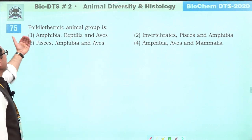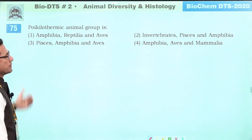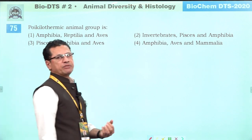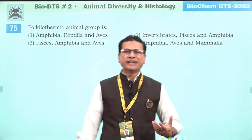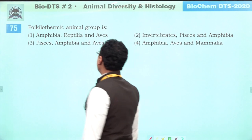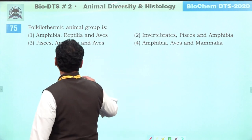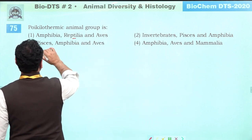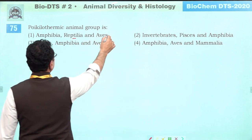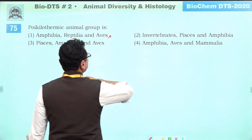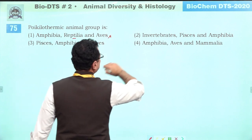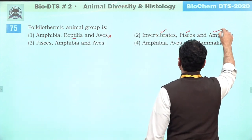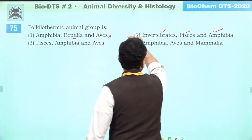Poikilothermic animals are those unable to maintain constant body temperature. They include reptiles, invertebrates, Pisces, and Amphibia. But Aves cannot be the answer. The group that includes Pisces and Amphibia is answer second.